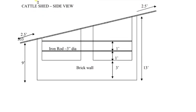Next we will see the cattle shed view. This is a basic cattle shed we can see mostly in rural areas. Looking at some measurements from the side view: there are two sides — one side will be 9 feet and the other side will be 13 feet, so one side is shorter than the other.